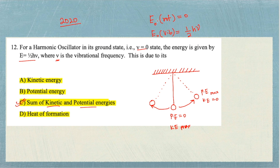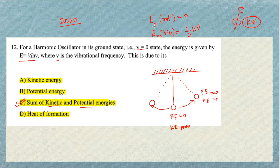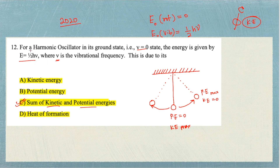In contrast, for rotation, the energy comes only from kinetic energy. In the ground state (J=0) the particle is stationary, so rotational kinetic energy is zero and the ground state energy is therefore zero. But for a harmonic oscillator, the particle vibrates even in the ground state, contributing both kinetic and potential energy — hence the non-zero ground state energy of ½hν. The correct answer is option C.